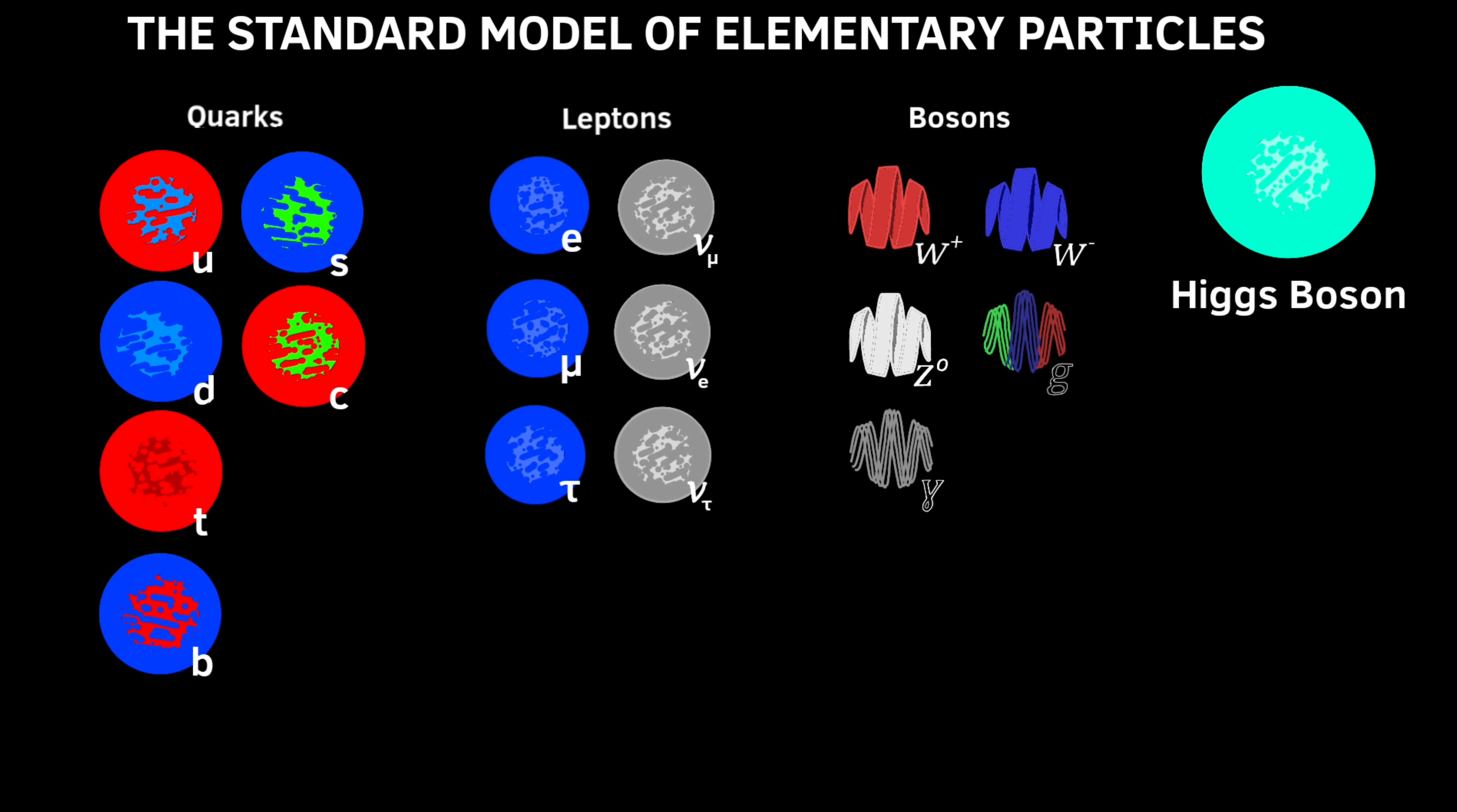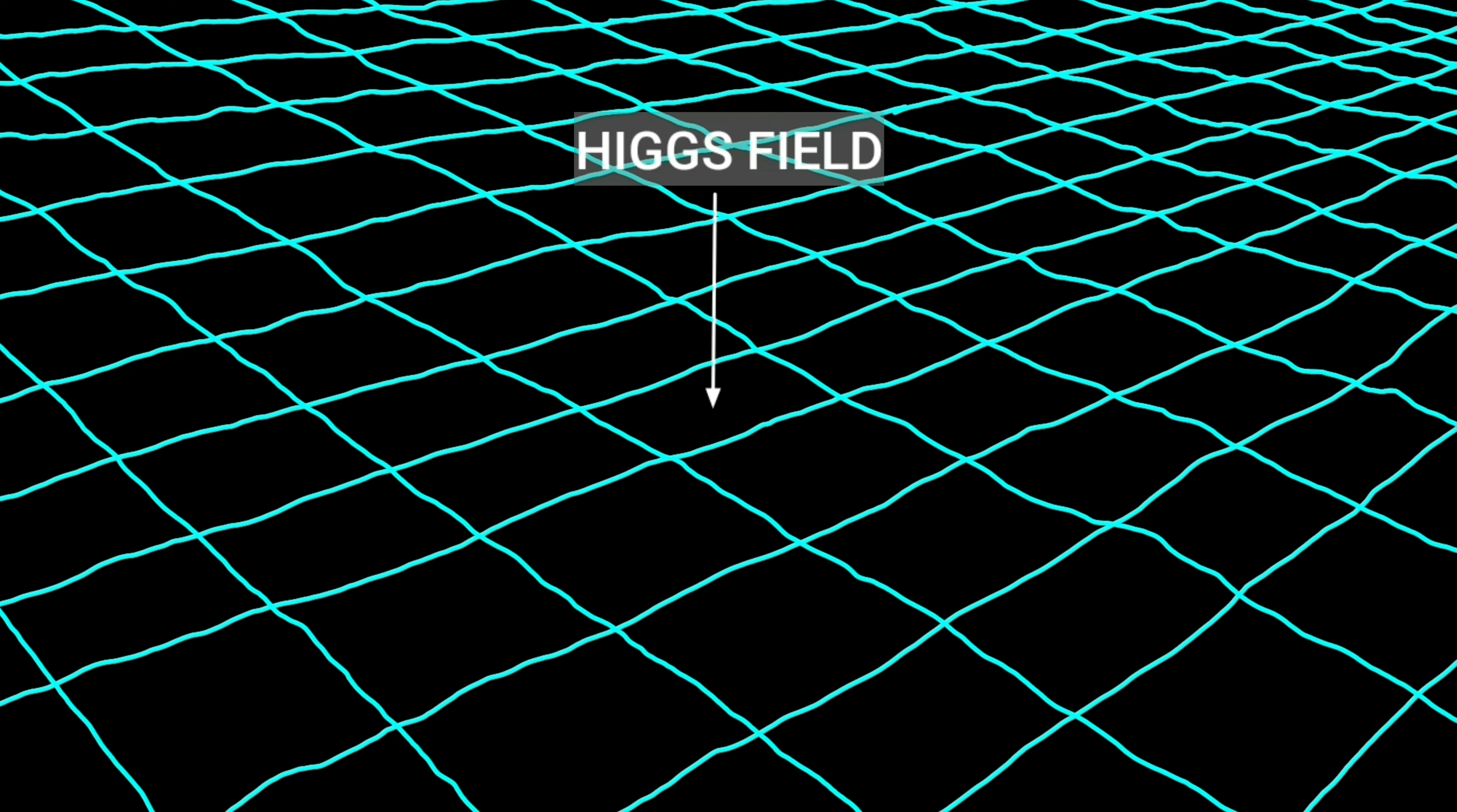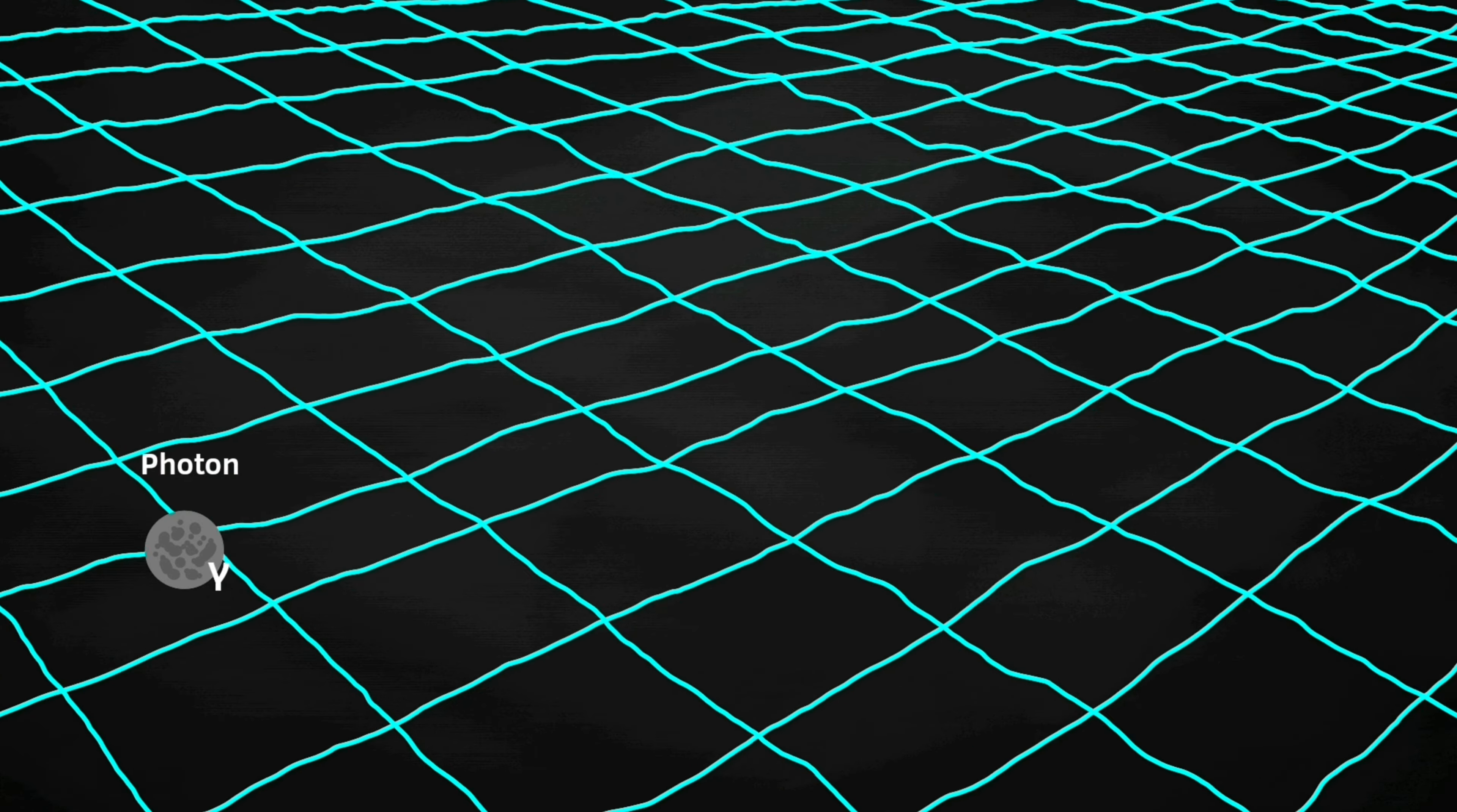But what gives mass to the elementary particles? There is something called Higgs field that fills up all the universe. It's literally everywhere. When the particles move through it, they gain mass by interacting with this field. The more a particle interacts with Higgs field, the heavier it is.